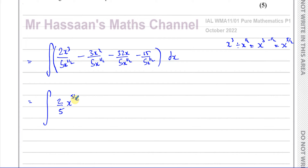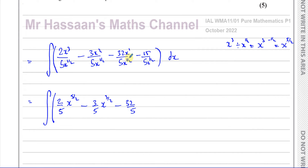I haven't started to integrate yet — I'm just getting it ready for integration, that's why the integral sign is still here. Then you have minus 3 over 5, and this is x to the power of 2 divided by x to the power of a half. Again, you subtract the powers. So that's 2 minus a half, which is 3 over 2 — that's 4 over 2 minus 1 over 2, which is 3 over 2. Minus 32 over 5, and you have x to the power of 1 divided by x to the power of a half, so you subtract: 1 minus a half, which is a half. And then you have minus 15 over 5, that's going to give you minus 3. And this x in the denominator is going to be written as x to the power of negative a half on the numerator. Now I have to integrate all of this with respect to x.